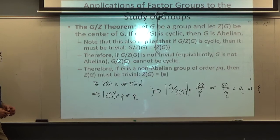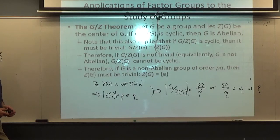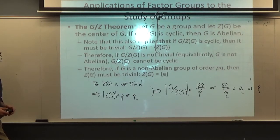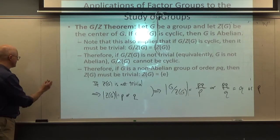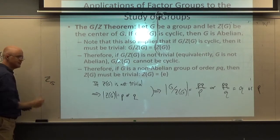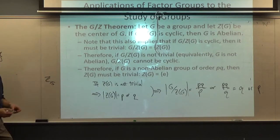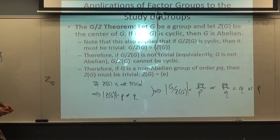For example, a non-abelian group of order 15 could not have a center of order 3 or 5. Actually, if I recall correctly, I think there's only one group of order 15, so this wouldn't apply to that situation. But for other situations — groups of order 35 that are non-abelian — the center must be trivial.